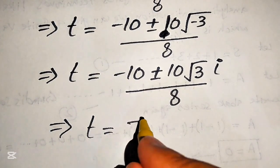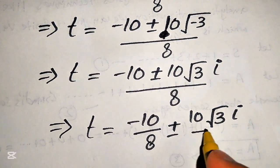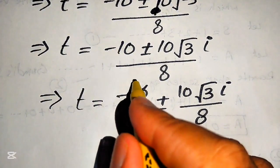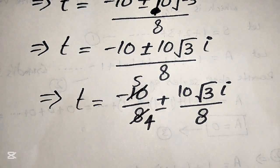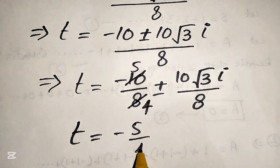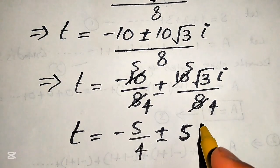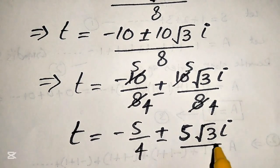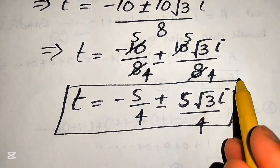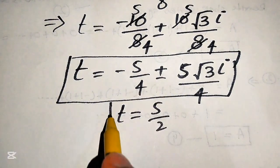Breaking this fraction apart: t equals minus 10 over 8 plus or minus 10 times square root of 3 times iota over 8. Cancelling the common factor of 2, we get t equals minus 5 over 4 plus or minus 5 times square root of 3 times iota over 4. These are the two complex roots of the given equation, while the one real root is t equals 5 over 2.